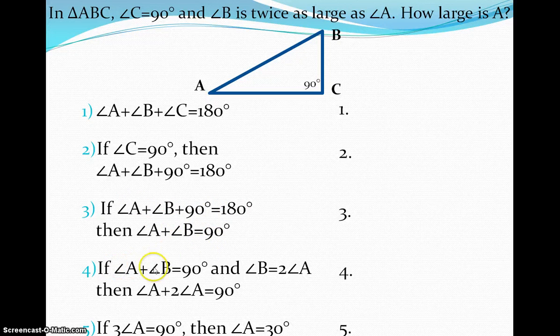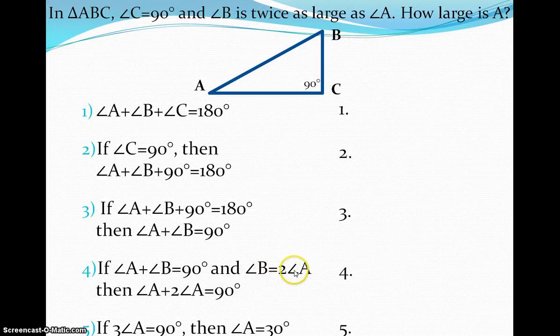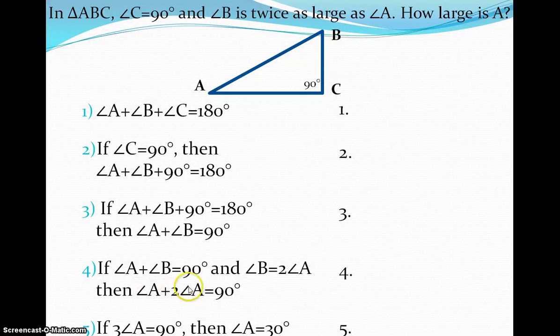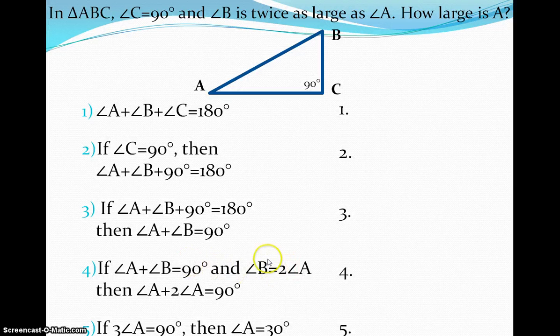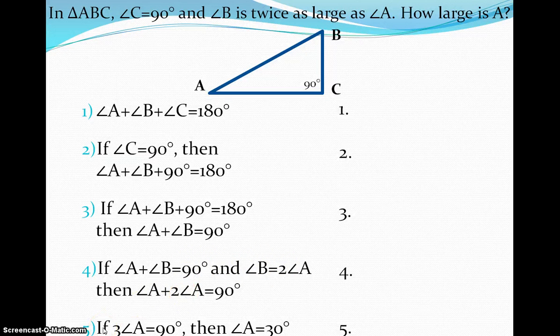If angle A plus angle B is equal to 90, which we got from 3, and angle B is equal to 2 times angle A, which is from our given up here, then I know that angle A plus 2 times angle A is equal to 90 degrees. What allows me to do that? Again, think about our statements. Think about our statements up here and why I'm able to conclude this here.